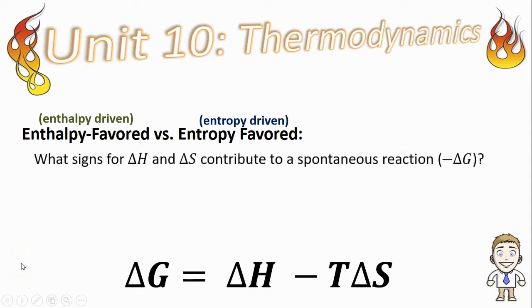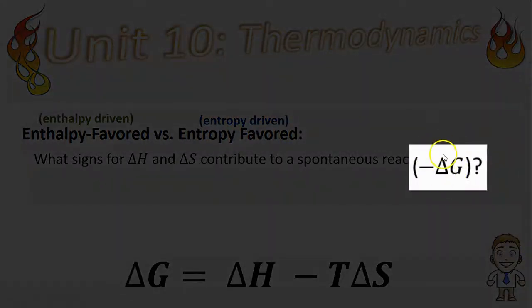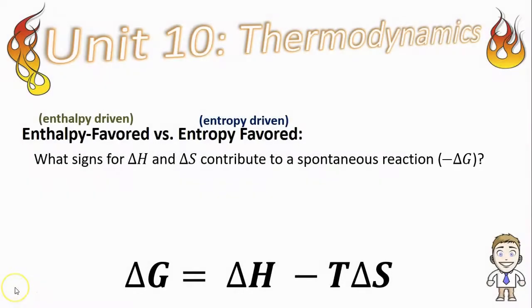Because you're looking for spontaneity, a good rule to use is just think about what signs for delta H and delta S would help contribute to a spontaneous reaction or would help contribute to a value of delta G that is negative. And if you think about it that way, as always needing that negative delta G value, that release of free energy to get spontaneity...